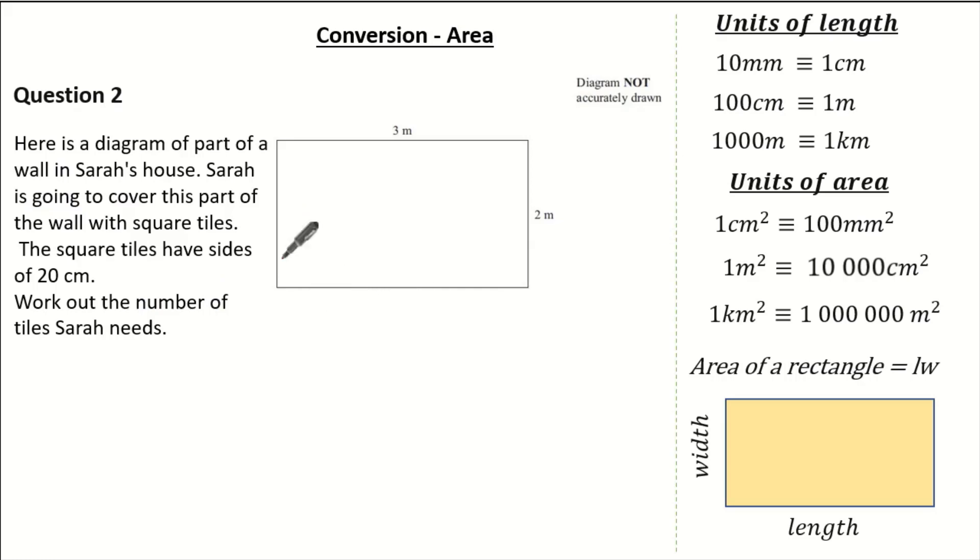Here, the question shows a diagram of part of a wall in Sarah's house. Sarah is going to cover part of the wall with square tiles, and the square tiles have sides of 20cm. We're asked to work out the number of tiles Sarah needs.